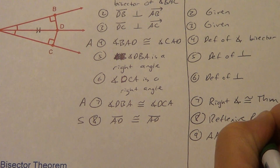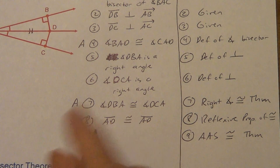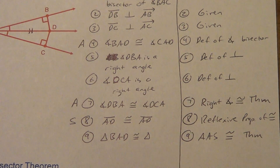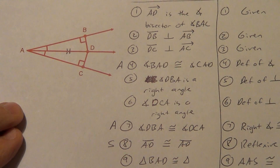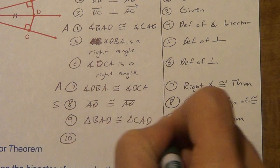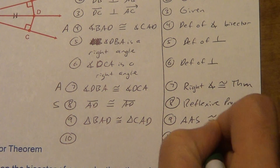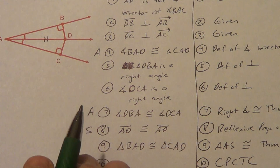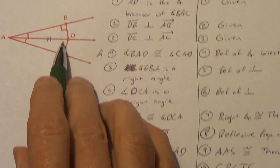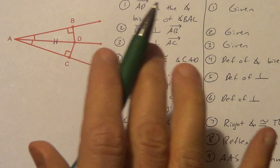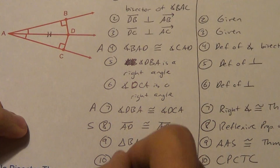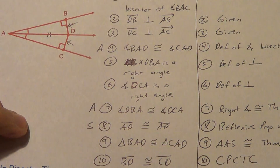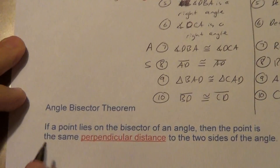Angle-angle-side helps me prove triangles are congruent. So triangle BAD is congruent to triangle CAD by AAS. And now, step 10: as soon as we say triangles are congruent, we finish with CPCTC. I could name several things, but I'm going to say segment BD is congruent to segment CD. Those 10 steps prove what's called the angle bisector theorem.